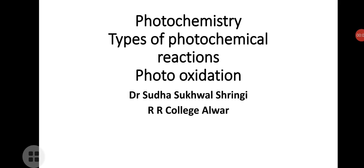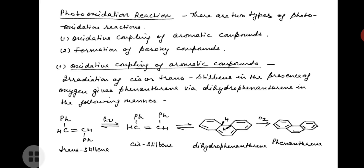Welcome students. Today we are going to study unit photochemistry, topic: types of photochemical reactions, and particularly today we will study photo oxidation reactions. There are two types of photo oxidation reactions: first is oxidative coupling of aromatic compounds, and second is formation of peroxy compounds. Now let us study them one by one.